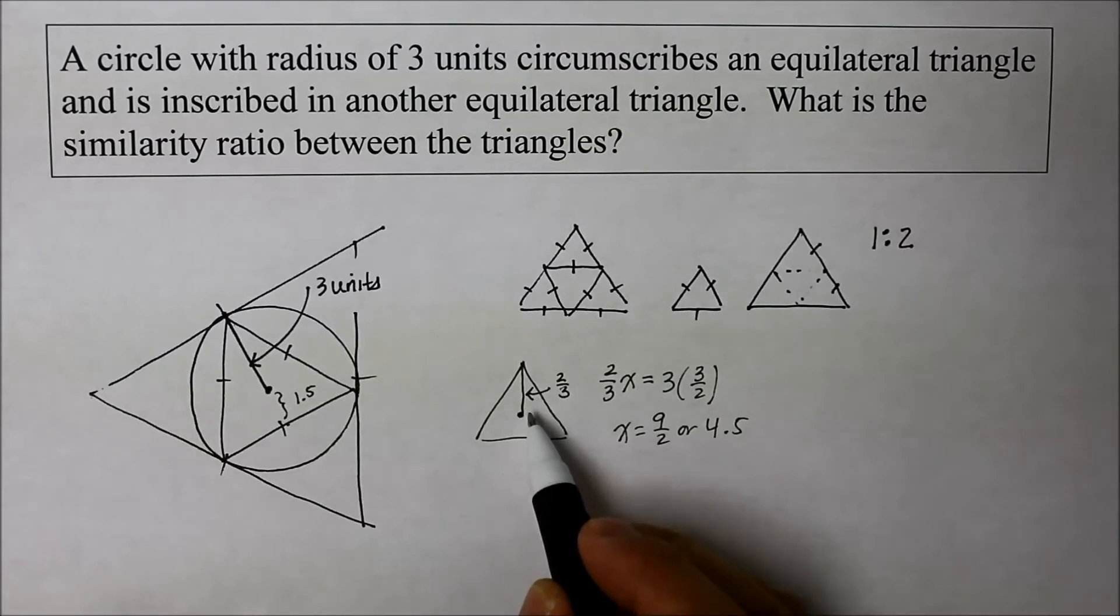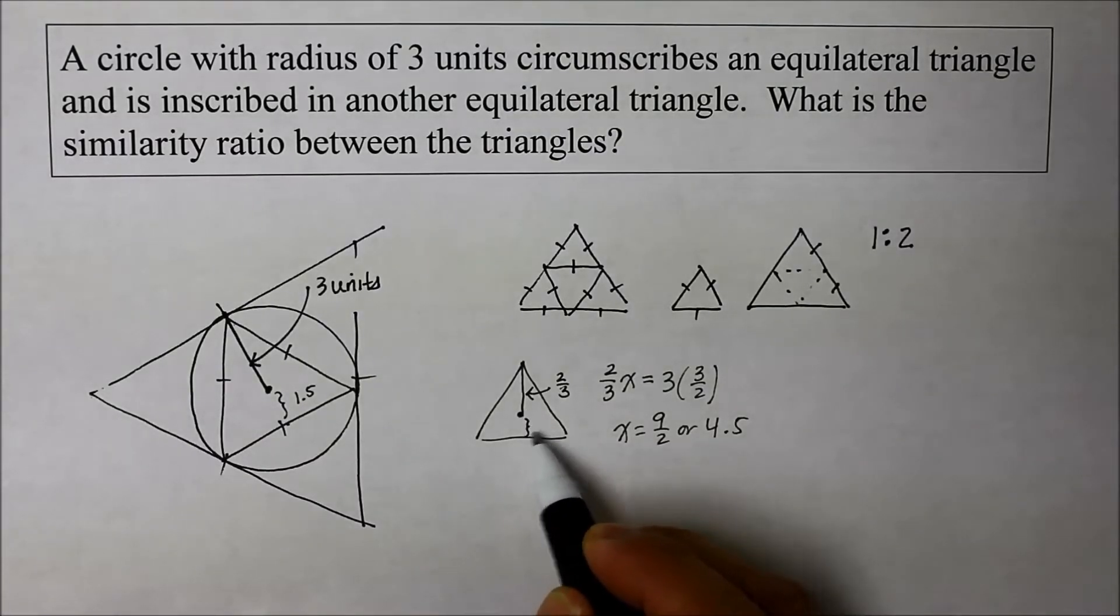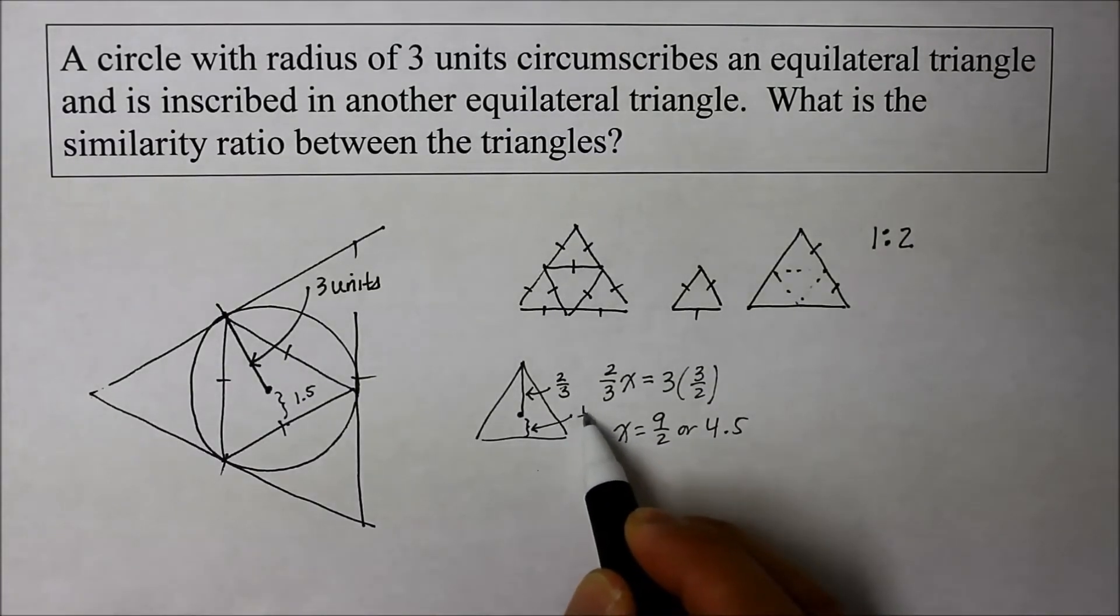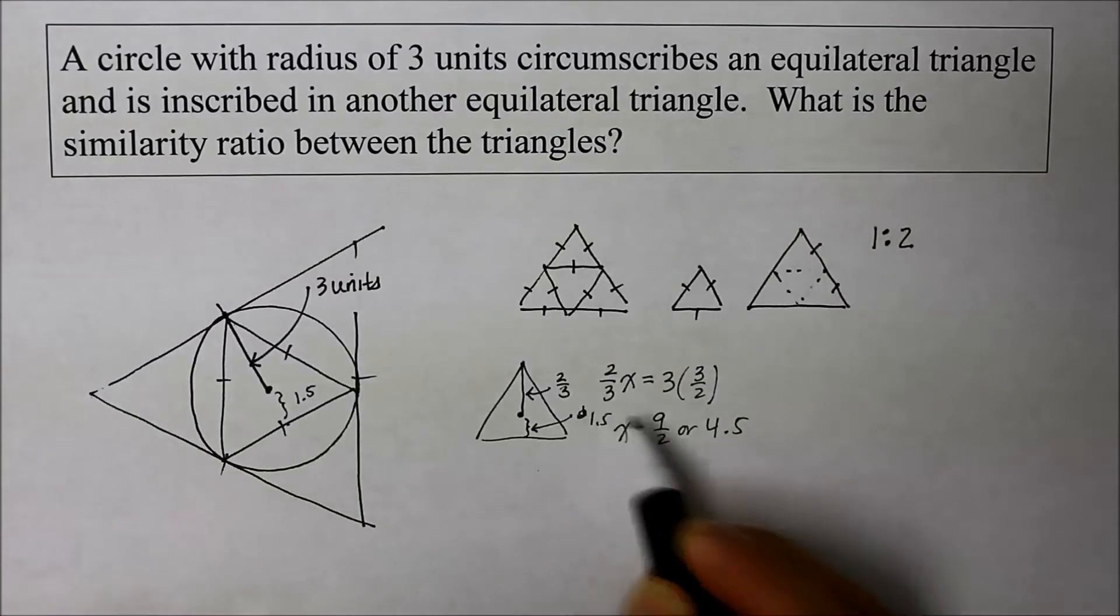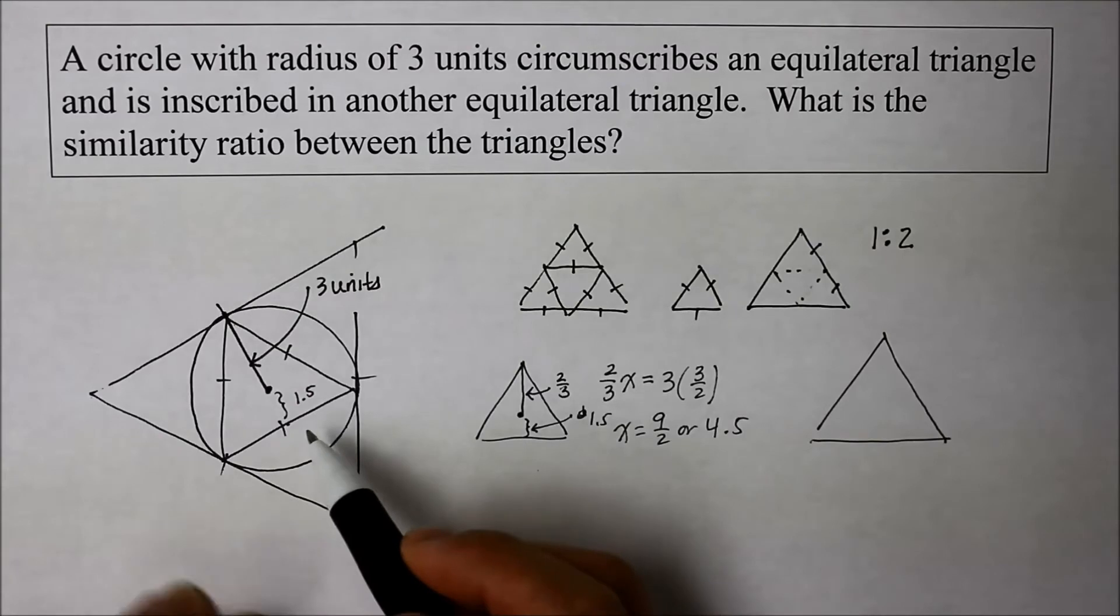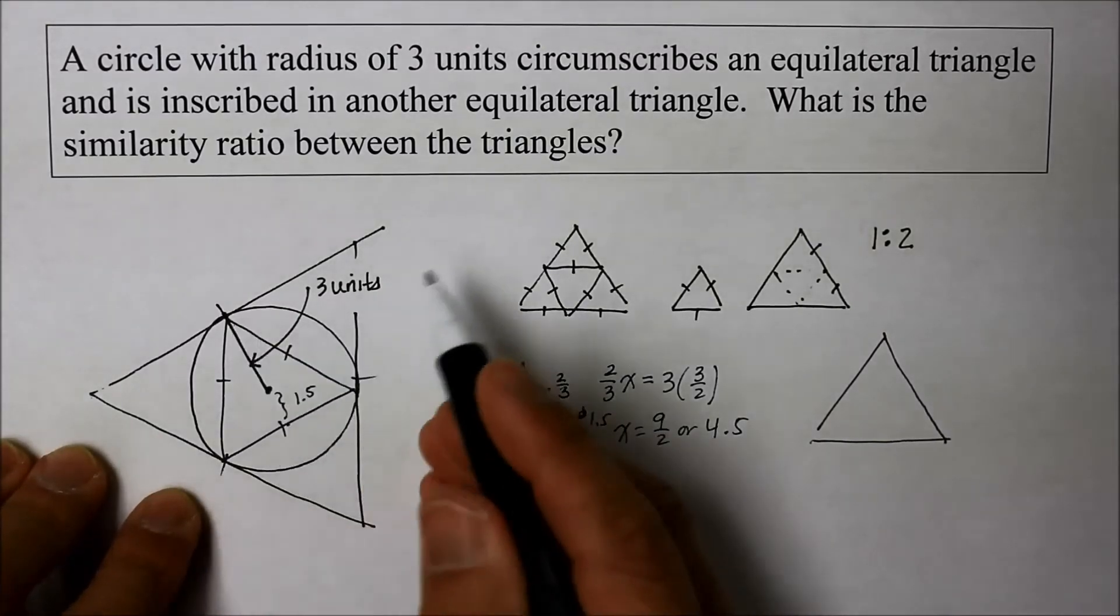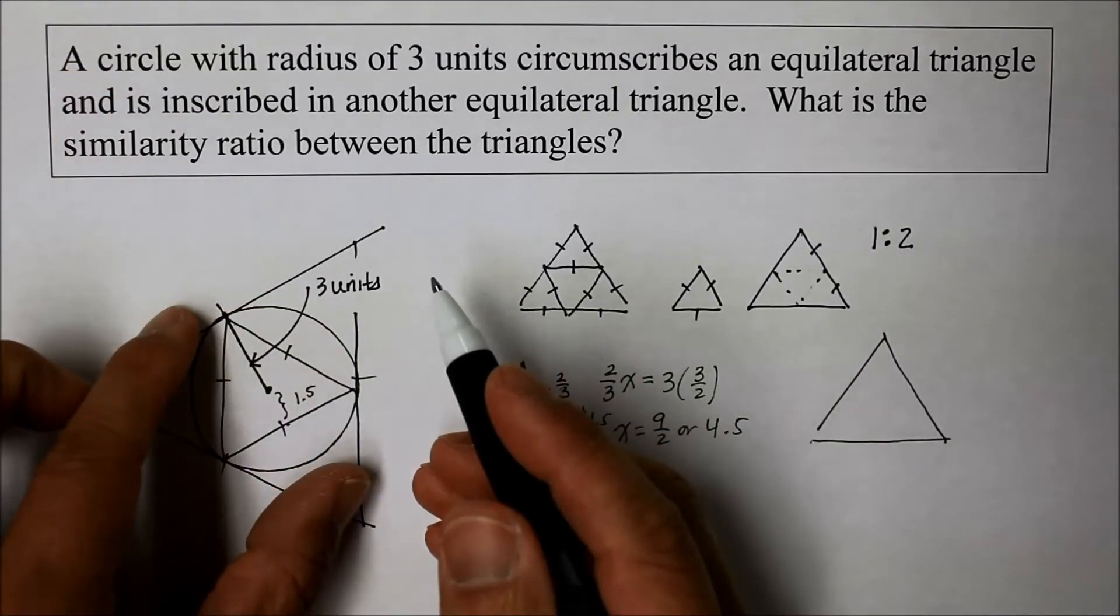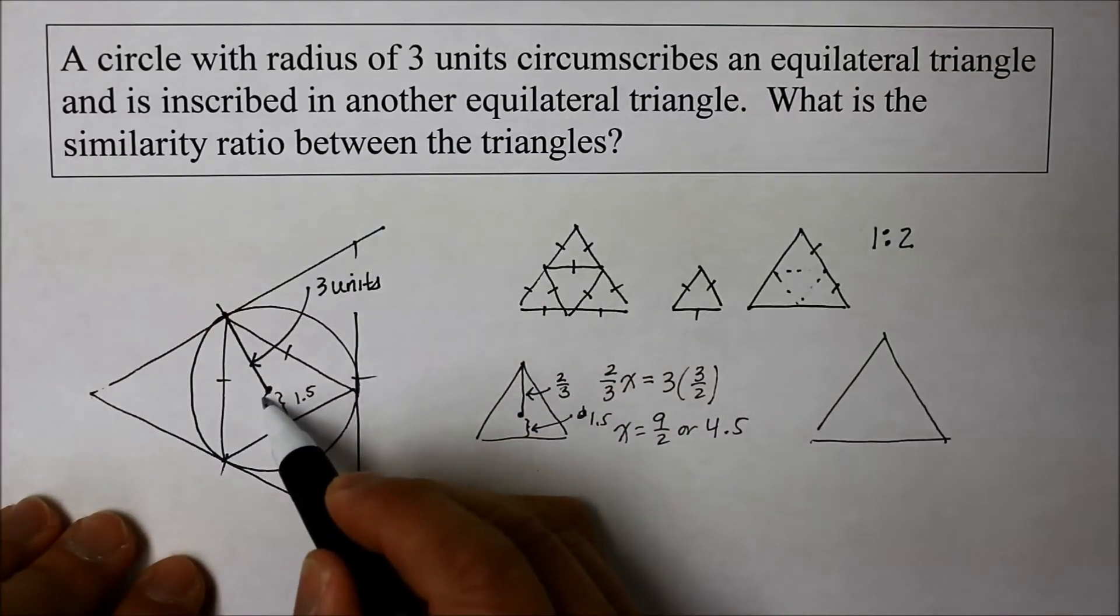So if that's three, and this is one point five, one point five. Now how about the bigger one? The bigger one is, look at the way it looks. Now if I were to rotate this triangle so the radius goes this way,